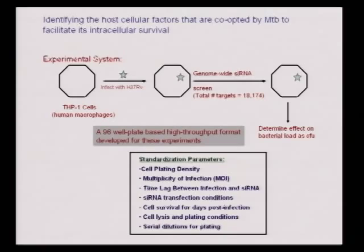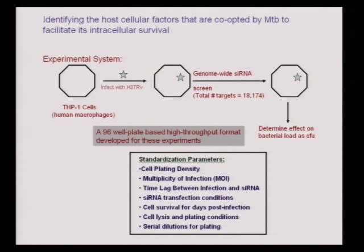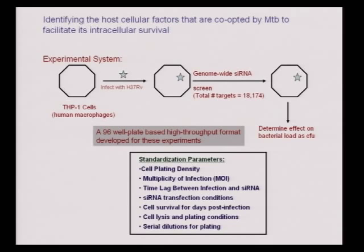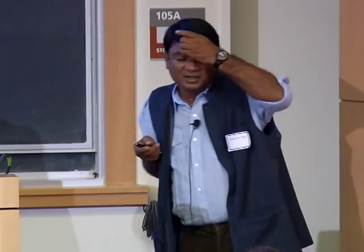This is the screen that Jeff just mentioned. Basically, we took human THP1 cells and infected them with H37RV, which is a laboratory virulent strain. Subsequent to the infection, we did siRNA knockdowns of all of the host proteins coded for by the human genome. We used a Dharmacon library with a total of 18,000+ targets. The knockdown was initiated several hours after the cells were infected, because we did not want to perturb processes related to the uptake of mycobacteria. We were really interested in examining that window where mycobacteria is interacting and establishing stable equilibrium within the host cell.